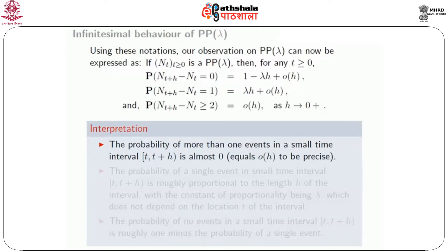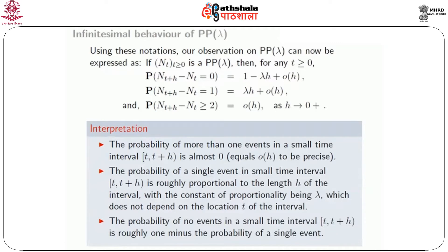The probability of a single event in a small time interval t to t+h is roughly proportional to the length h of the interval: P(N(t+h) - N(t) = 1) = lambda*h + o(h). The constant of proportionality is lambda, which does not depend on t or h — it does not depend on the location t of the interval. And the probability of no events is roughly 1 minus the probability of a single event, since the probability of more than one event is almost 0.